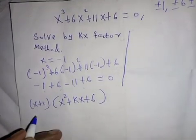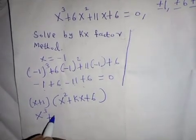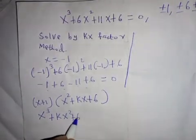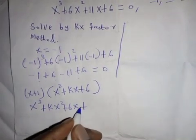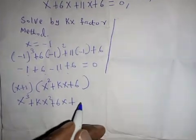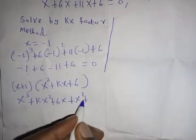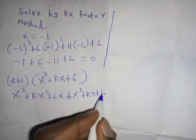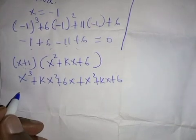We expand this: multiplying everything by x we get x cubed plus kx squared plus 6x. Then multiplying everything by one we get x squared plus kx plus six. So the full expansion is x cubed plus kx squared plus 6x plus x squared plus kx plus six.